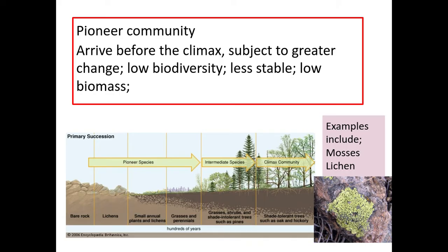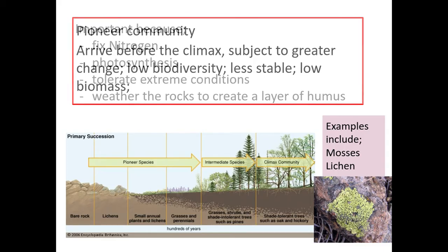The pioneer species are right before the climax. They show greater adaptation for change, they have a lower biodiversity, they're less stable, and also have very low biomass. Examples of pioneer species include things like lichen and mosses.